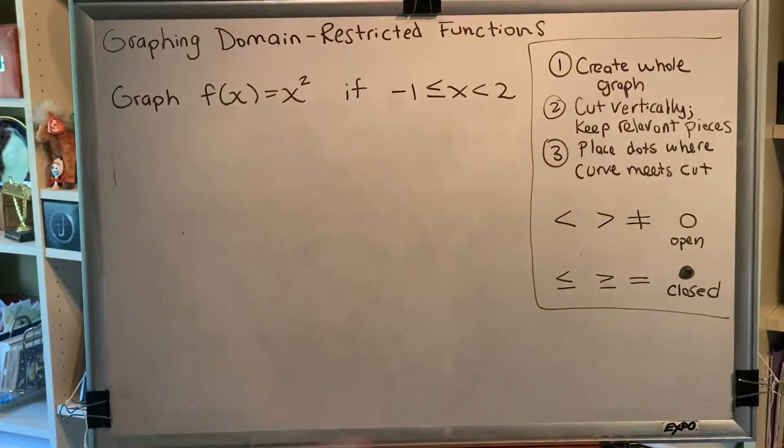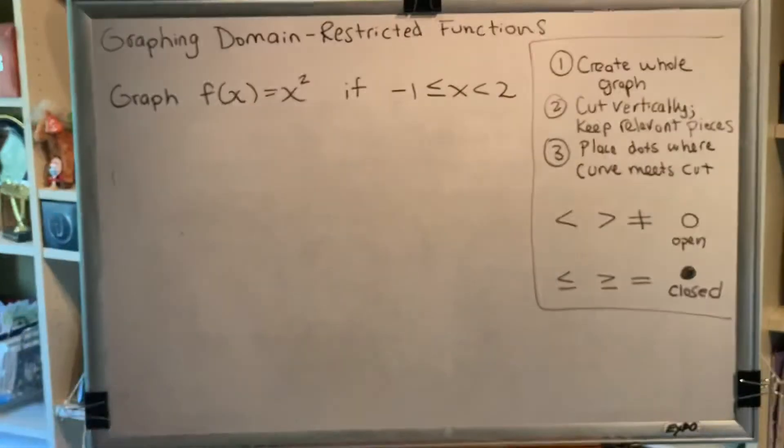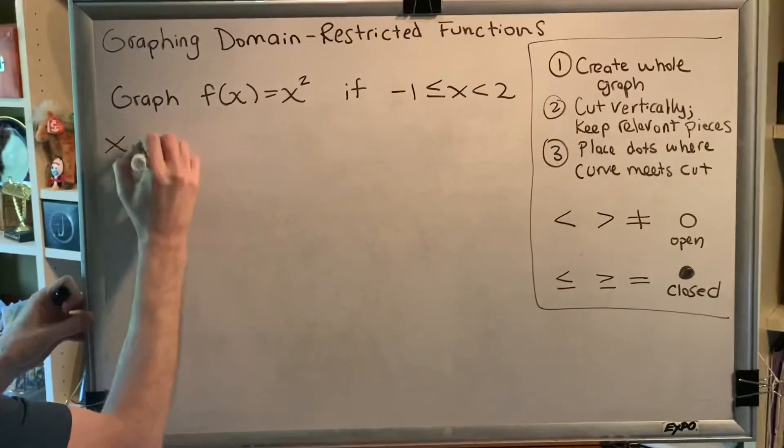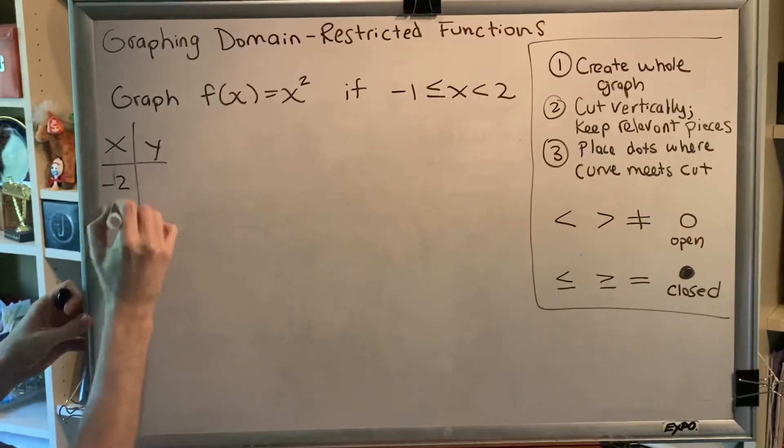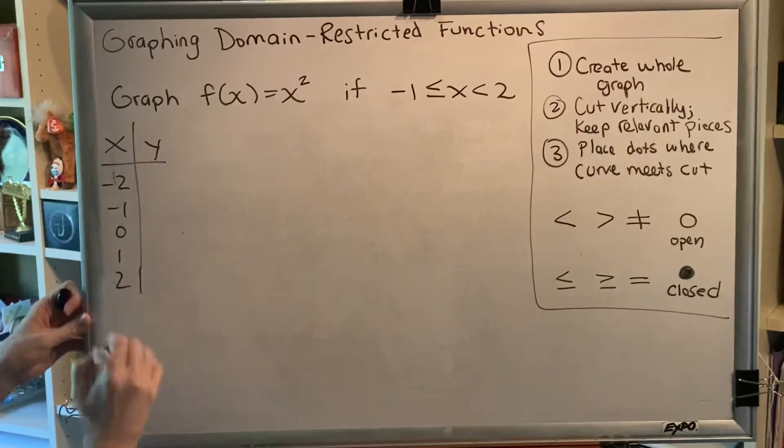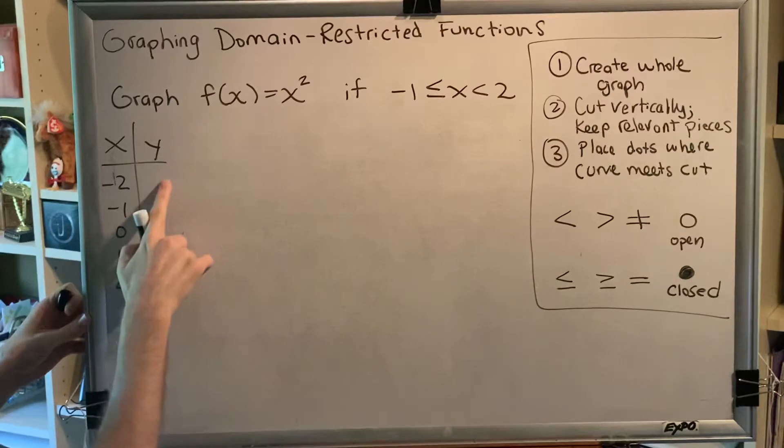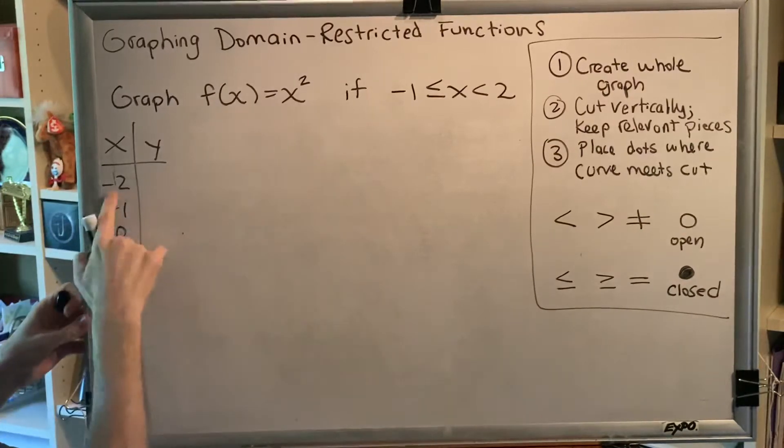Okay, let's go through the steps together. First, create the whole graph. Well, this is the square function. This is one of our easier functions from the library of functions. The x values range from negative 2 to 2, and to find y, as the name implies, you just square x.